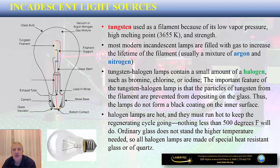Most modern incandescent lamps, in addition to the tungsten filament, are also filled with a gas with the purpose of extending the lifetime of the filament. That gas is usually a mixture of argon and nitrogen, although we may also come across lamps that are based on halogen.